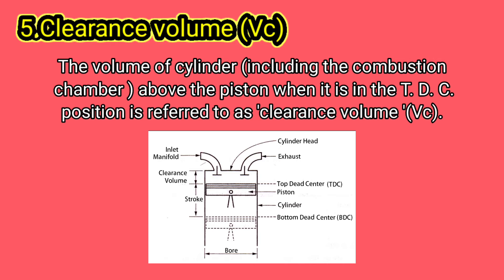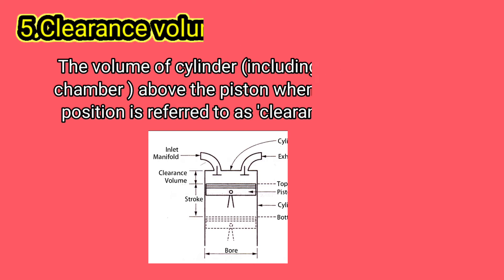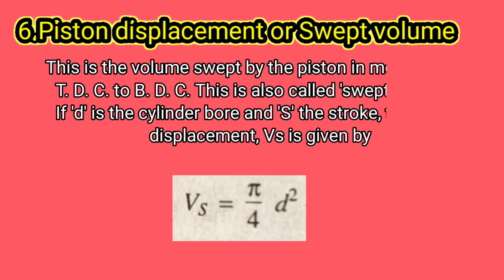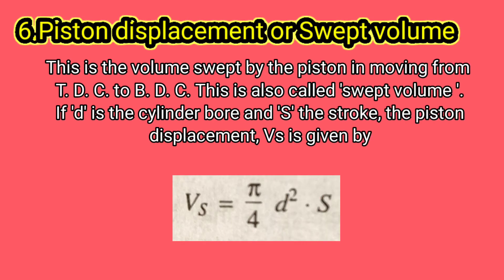Clearance Volume (VC): the volume of the cylinder including the combustion chamber above the piston when it is in the TDC position is referred to as clearance volume VC. Piston displacement or swept volume: this is the volume swept by the piston in moving from TDC to BDC.